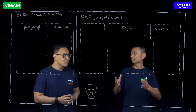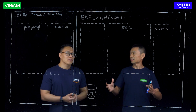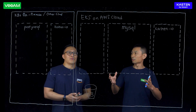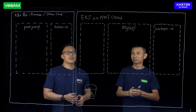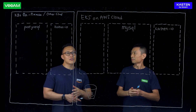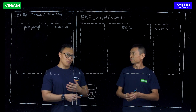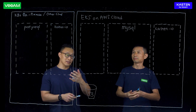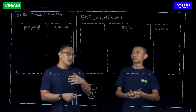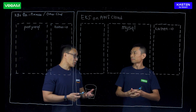So what are the Kubernetes services offered by AWS? The fully managed offering from AWS is called Elastic Kubernetes Service, EKS for short.